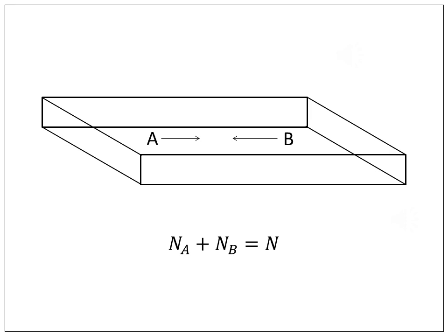Then after diffusion, that is for the condition of steady-state, the net flux N is the sum of flux of both components, that is Na and Nb. This can be written as Na plus Nb equals N.